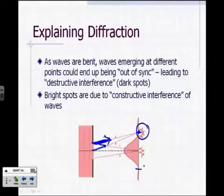And so that's how you explain diffraction. And when you get these very bright spots, that's where you have what's called constructive interference.